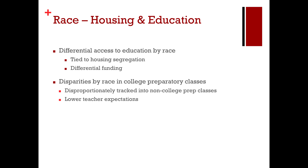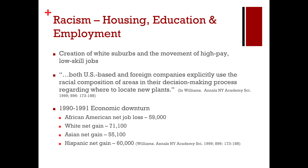We also talked about the differential access to education by race and how education is tied to housing segregation as well as differential funding. But there are also disparities by race in college prep classes — African Americans and non-whites are disproportionately tracked into non-college prep courses and tend to be viewed with lower teacher expectations. That tracks them into blue-collar jobs more likely than white-collar jobs. The creation of white suburbs and the movement of high-pay, low-skilled jobs into those suburbs made it harder for individuals living in urban areas to access wealth.